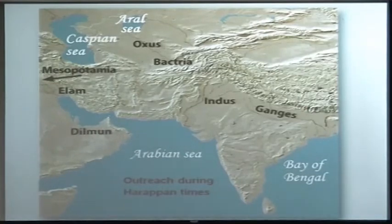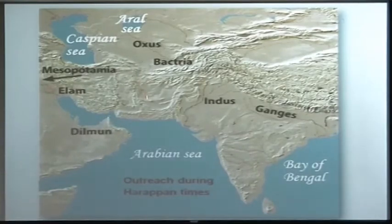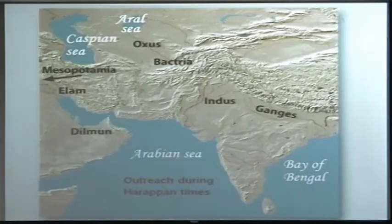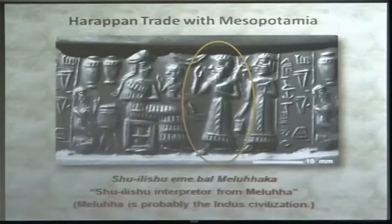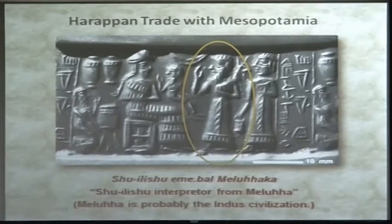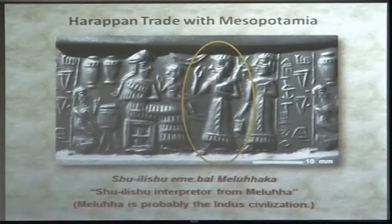This map shows the interactions between the Harappans and surrounding regions — the Gulf, what is today Iran, Afghanistan, Mesopotamia, and Central Asia — all the way to near the Caspian Sea, where a few Harappan seals and artifacts were found. The outreach is quite undeniable. A cuneiform inscription records an interpreter who came from Meluhha, probably the Indus civilization, and who could speak both the local Mesopotamian language and the Harappan language. We would be very happy to know what that Harappan language was, but that's another matter.